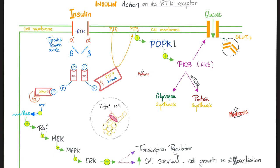What do kinases do? They add phosphate — converting PIP2 into PIP3, the difference being a phosphate. PIP3 is now active and will activate PDPK1, which activates PKB — protein kinase B. Glucagon activates protein kinase A, but insulin activates protein kinase B, because there is a difference between insulin land and glucagon land.